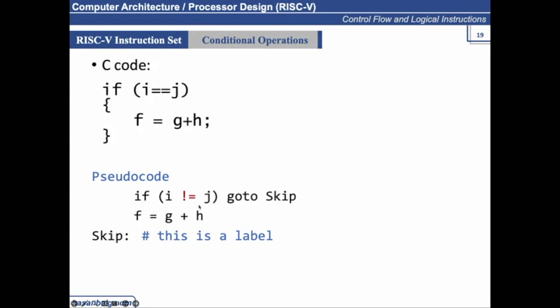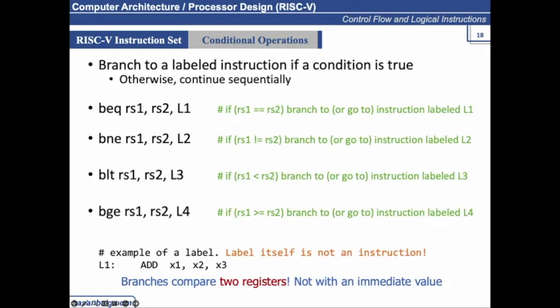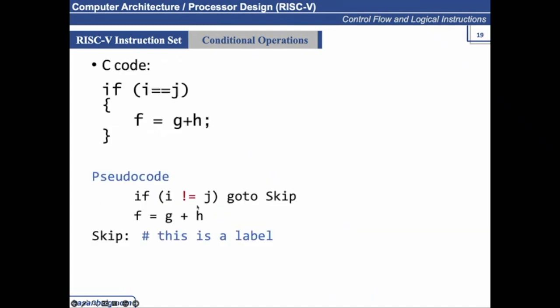So here, what I am doing is checking if i is not equal to j — why? Because in C or Python, when the condition satisfies, the next immediate instruction in the block is executed. But in assembly language, when the condition satisfies, it takes a branch and jumps to a piece of code; otherwise it goes sequentially. This is why we check for the negative condition. If i is not equal to j, and this condition does not satisfy, it will execute the next line. If i is not equal to j and the condition does satisfy, then the control should continue from the skip label.